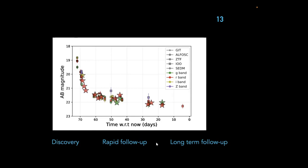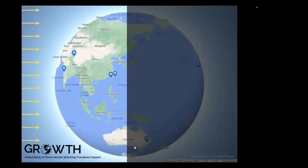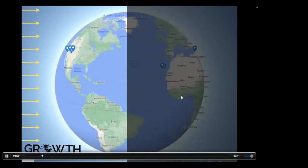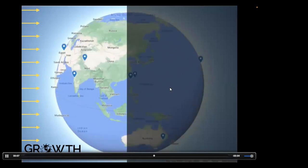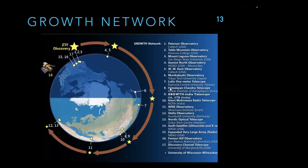Also, ground-based optical telescopes can only observe at night — when the sun is out, you're stuck. A few years ago, astronomers came together to create a fantastic global network of telescopes, known as the GROWTH network, with many observatories across the world. If you discover something with one telescope, you can relay to the next observatory around the globe for continuous coverage.